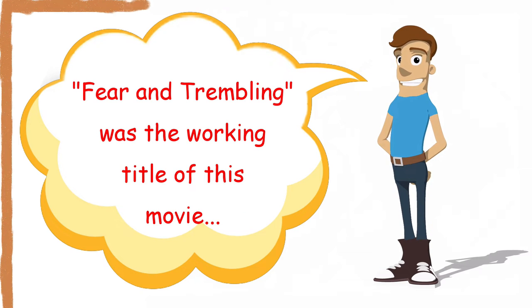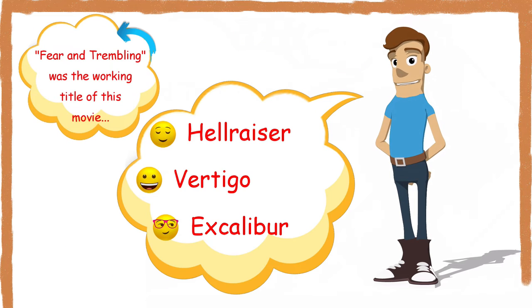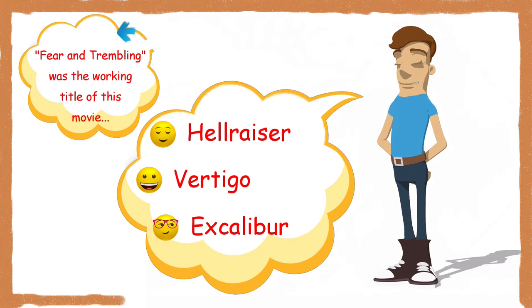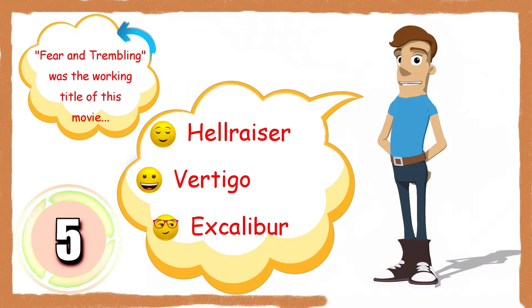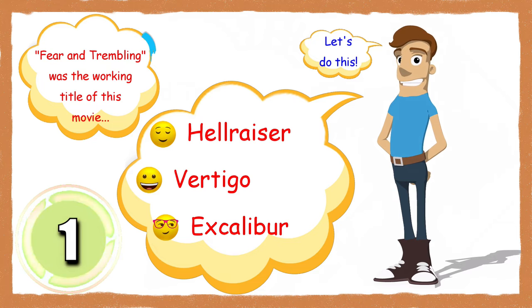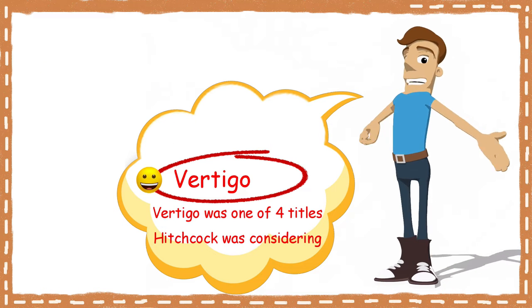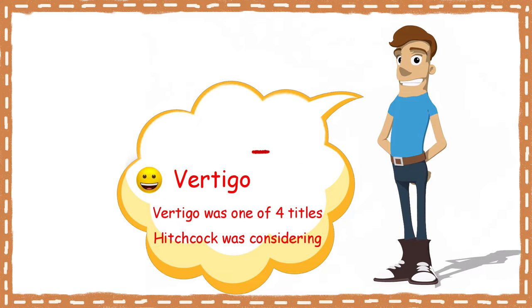Fear and Trembling was the working title of this movie. Hellraiser, Vertigo, or Excalibur? It was Vertigo. Vertigo was one of four titles Hitchcock was considered.